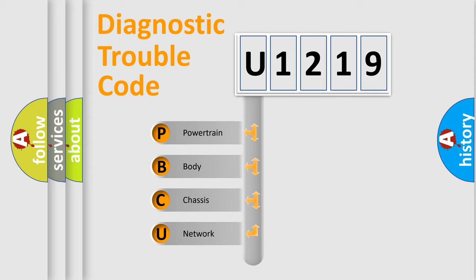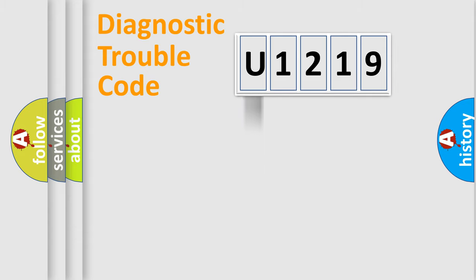We divide the electric system of automobile into four basic units: Powertrain, Body, Chassis, and Network. This distribution is defined in the first character code.